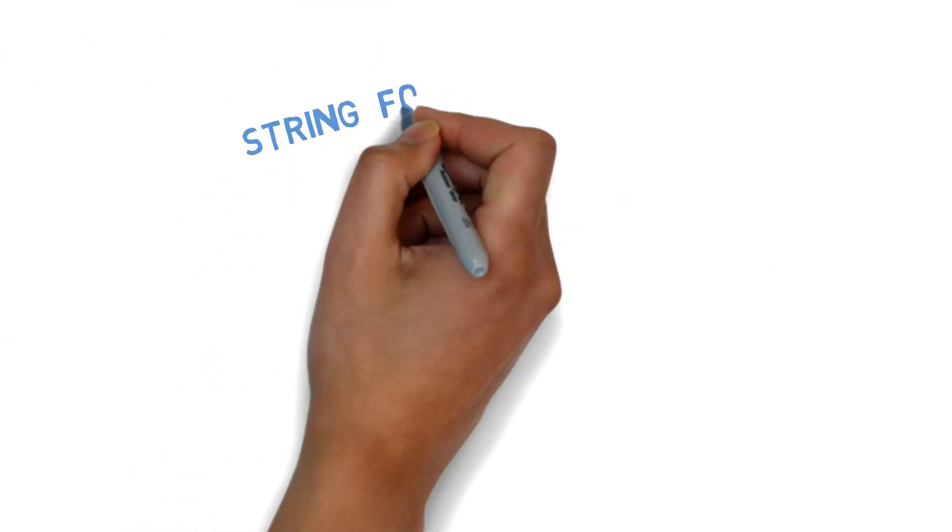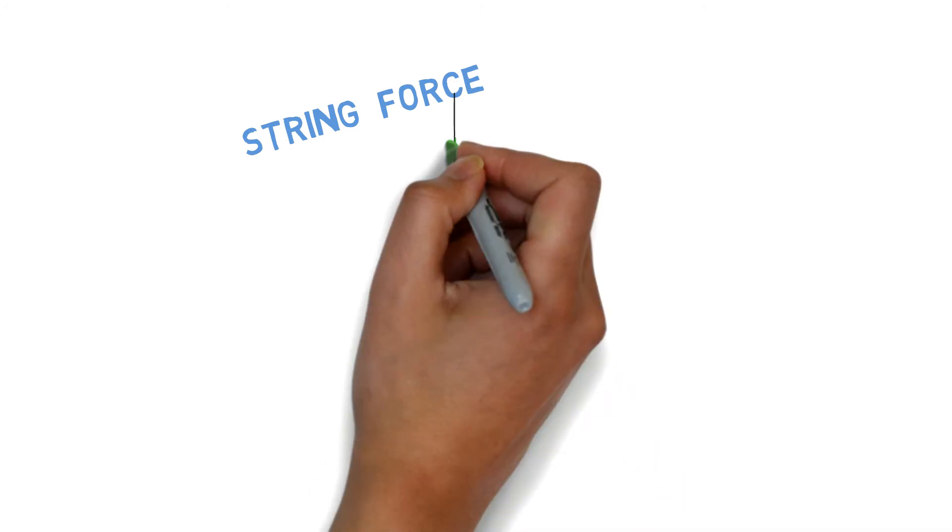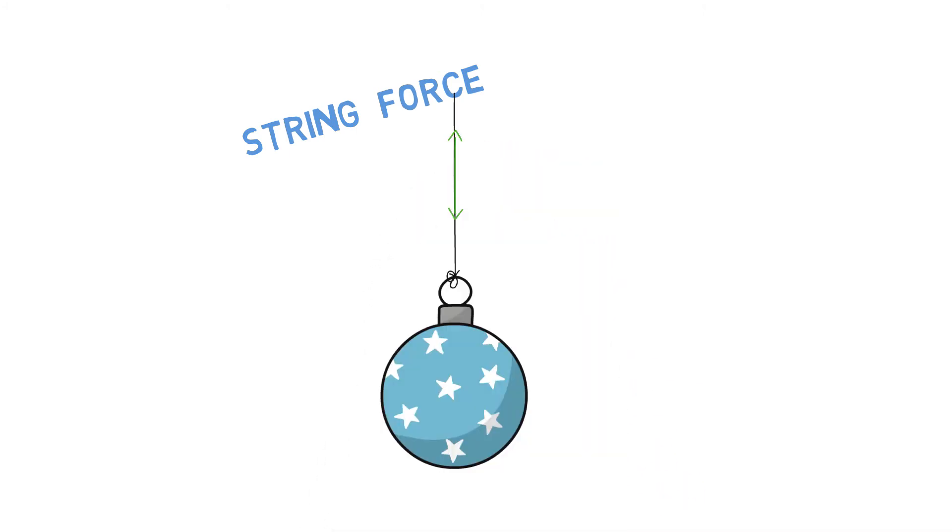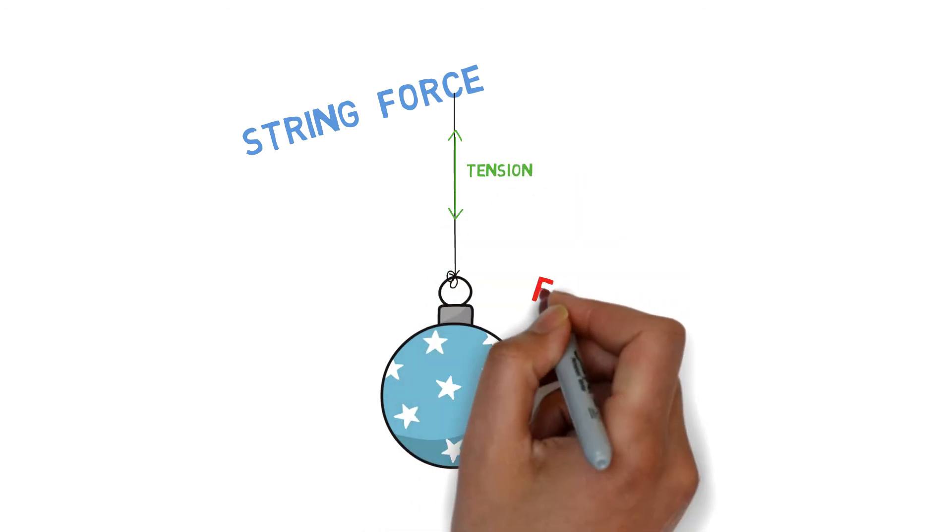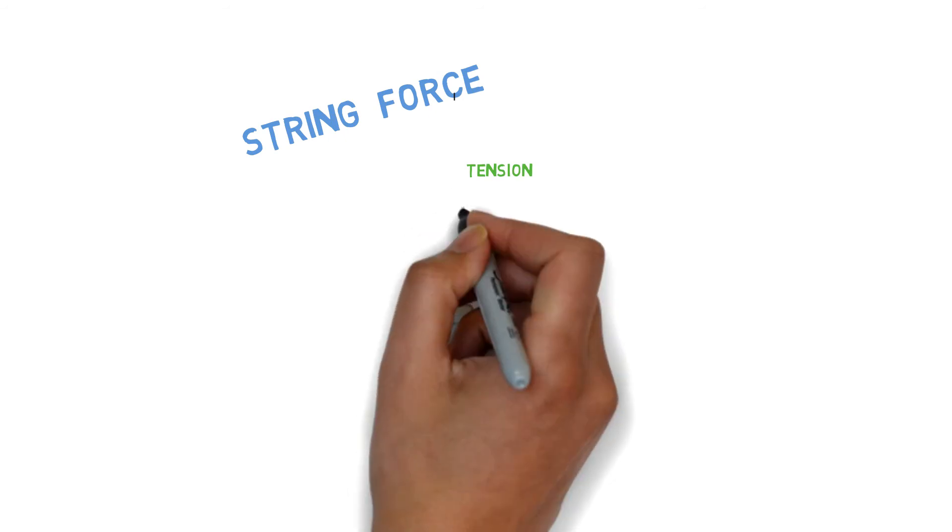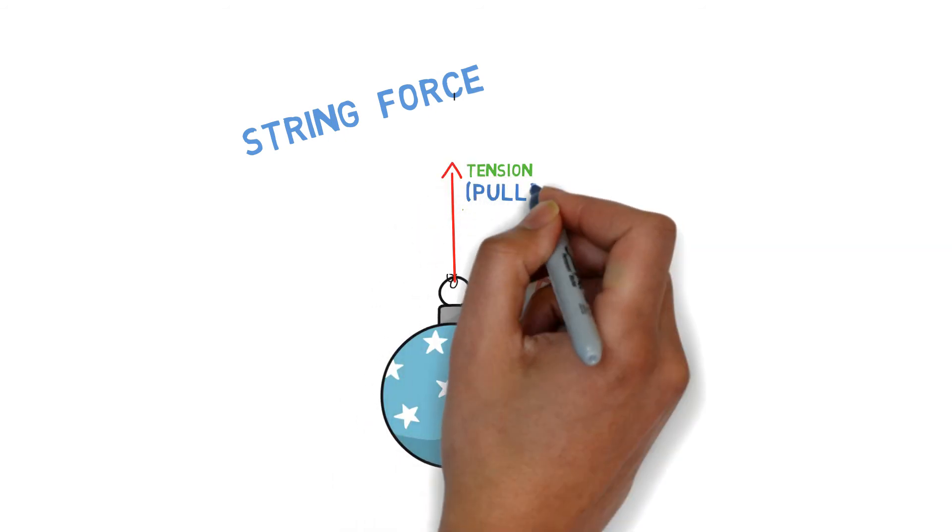Tension force. This type of force would exist whenever the body is attached to a string or a cable. As you always see, some mass hanging from a string tends to pull the string and apply a tensile force on the string, trying to increase its length.